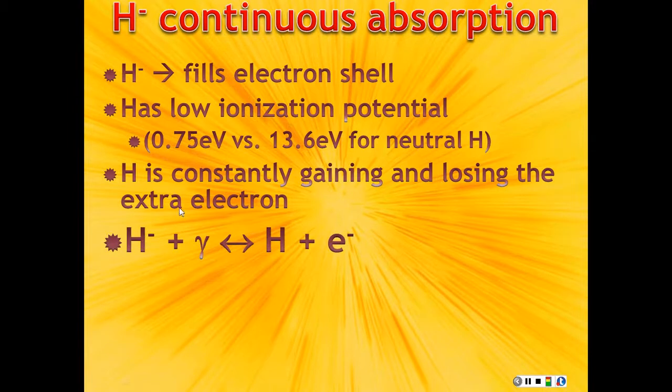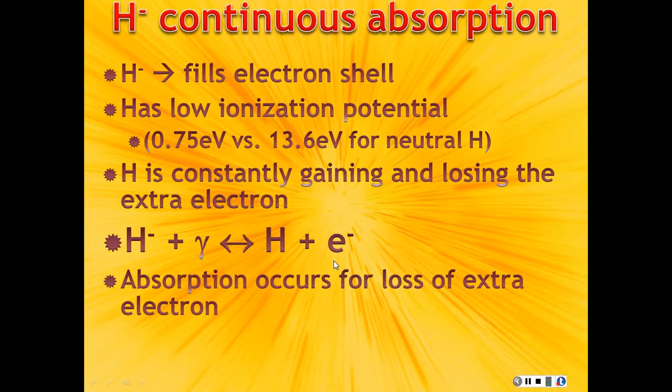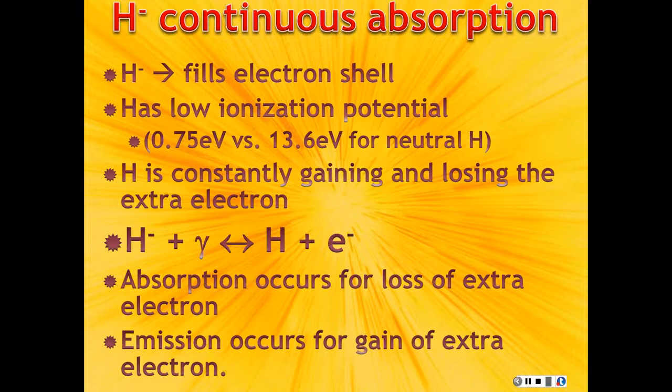And so, what you get is this hydrogen with an extra electron plus a photon goes backwards and forwards between neutral hydrogen and electrons being free. And so, you get lots of absorption and lots of emission, and you don't have any lines, and so you get this nice continuum. And that's where we're going to stop for this topic. We'll be coming back in a second.